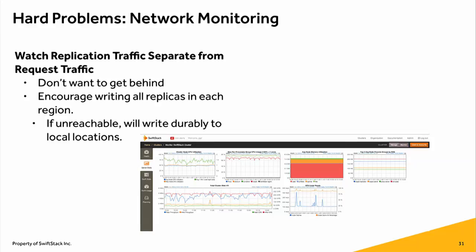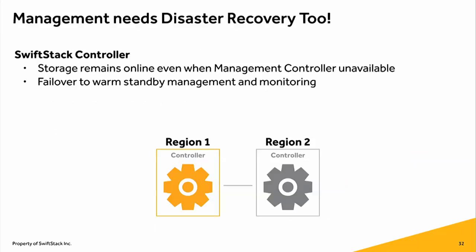Even if that WAN link goes down while you're writing, it will still find places to put the data durably, and when the WAN link comes back it'll push stuff over. Management also needs disaster recovery — make sure your deployment and configuration management tools aren't just some VM parked in a data center that's now not accessible. Have a disaster recovery strategy for however you're managing the system. The way we do it is we have a warm failover in the other environment and use the same DNS strategy to flop over when needed.